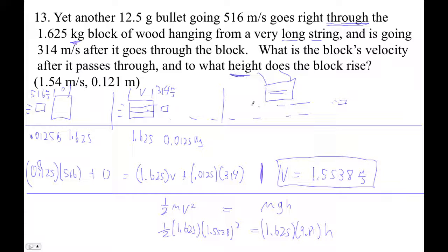Times 1.5538 squared equals 1.625 times 9.81 times h. And that's where we're trying to find the height. Okay, so notice that the mass cancels. So I'm going to be lazy. I'm just going to go 0.5 times that answer I just got squared and then divide by 9.81. I should have the height. I'm getting 0.123 meters. Why am I so far off? Here it's 1.21 and there it's 1.23. Can I quickly figure that out? 1.625. I got this right. This is definitely right.